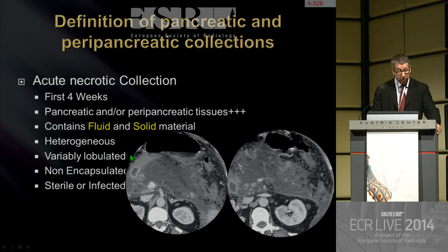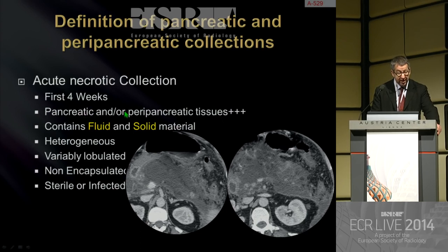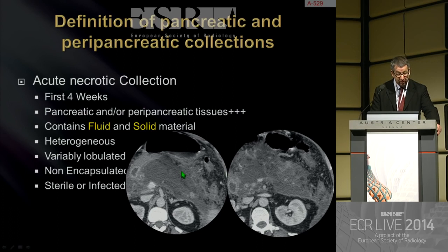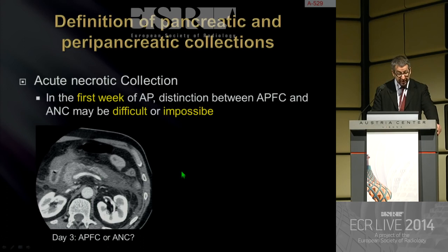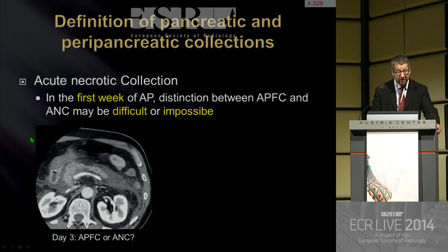Acute necrotic collection is a term to use in the first four weeks in case of pancreatic necrosis, located in the pancreatic parenchyma and/or the peripancreatic tissues. It will contain both fluid and solid material, appearing clearly heterogeneous with variably lobulated peripheral appearance, but it is not encapsulated in the first four weeks. It may be sterile or become infected. In the first week, especially before 72 hours, it will be clearly difficult to distinguish between APFC and ANC.